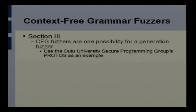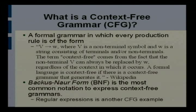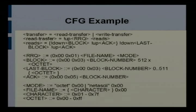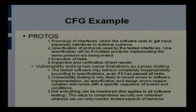That's all the intro; now we go into context-free grammars. I'm not a context-free grammar expert and I've never written a fuzzer that uses them. But the people at Oulu University Secure Programming Group came up with Protos. You can completely define a protocol using context-free grammars — transfer is a read or a write, a read is a read request and a reads, a read request is a null or one plus a filename. You can say do the right thing or, 30% of the time, do something not normal. That's a really good way to do it.